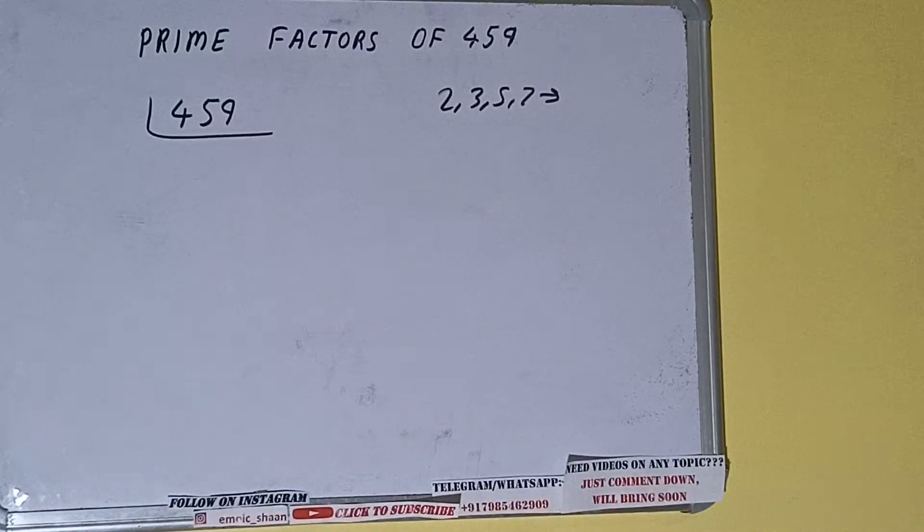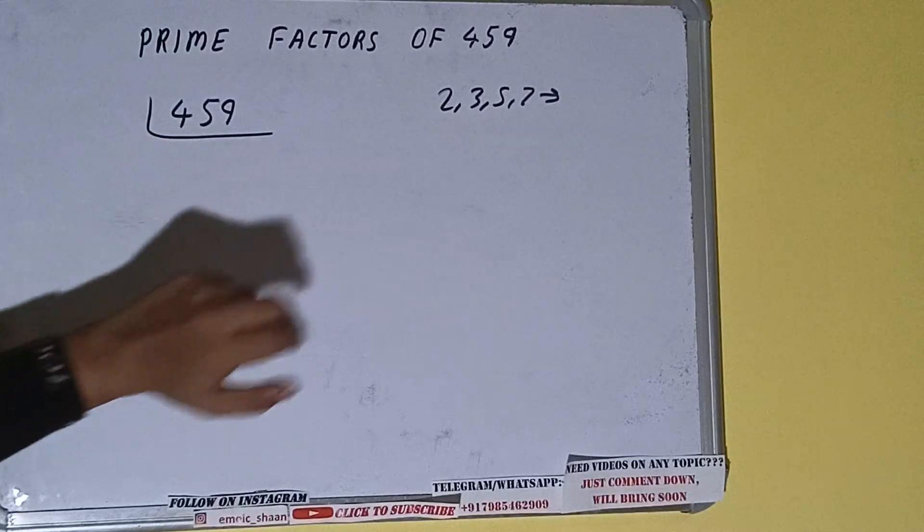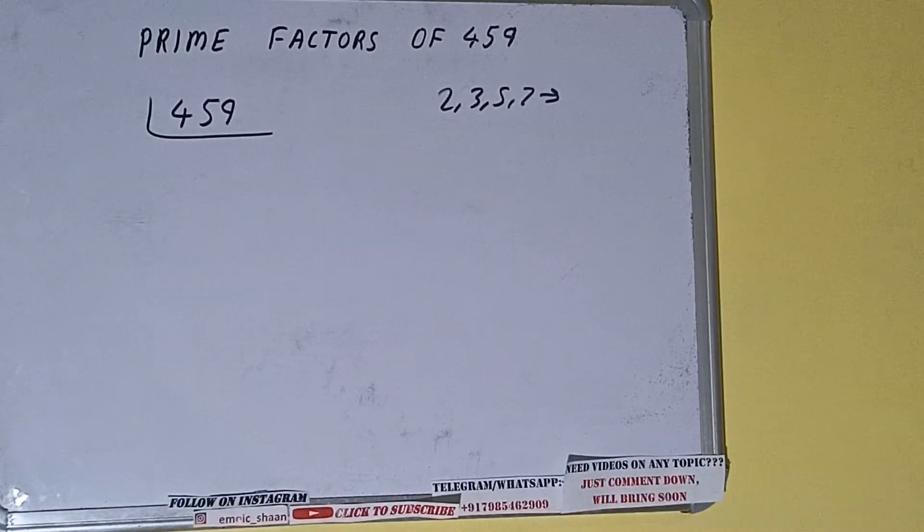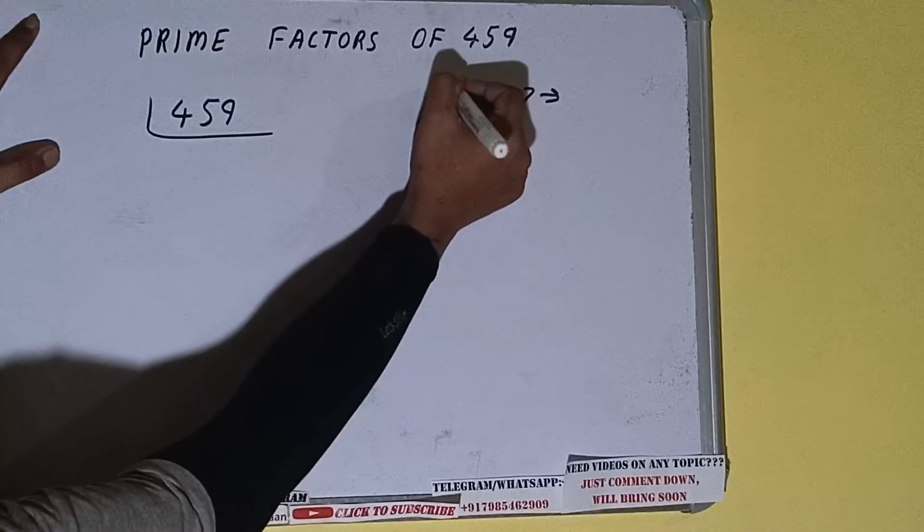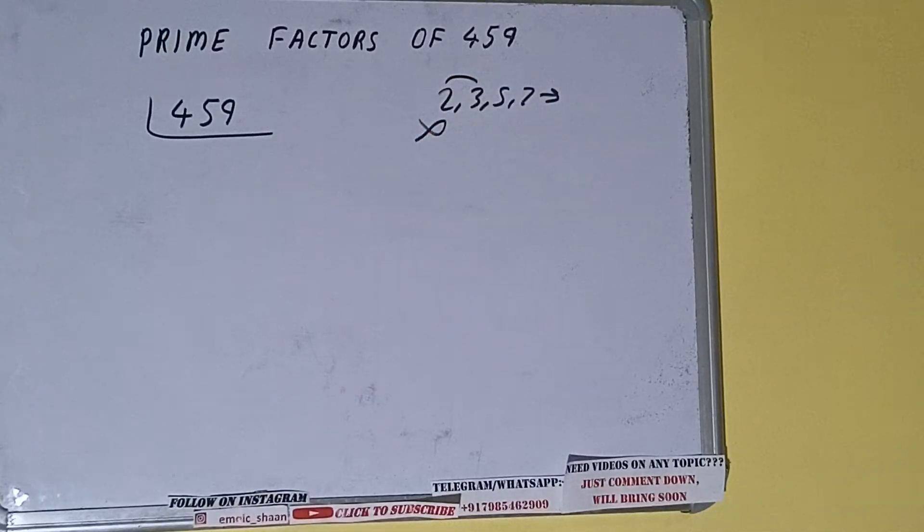That is 2. Is the number 459 divisible by 2? Clearly not, because the number is odd. So we'll be checking with the next lowest prime number, that is 3.